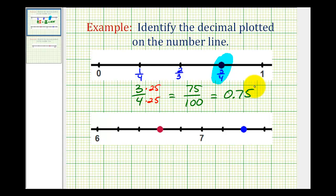Let's try another one. Notice here we have a number somewhere between six and seven. And notice that between six and seven we have one, two, three, four, five equal parts.